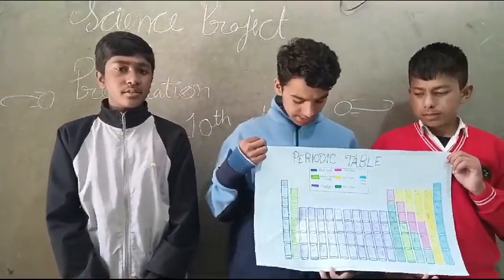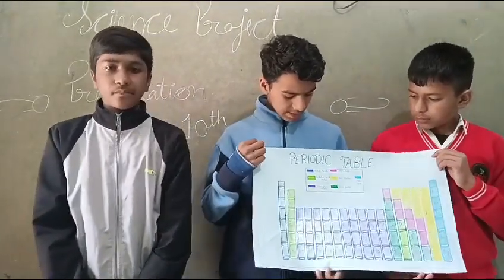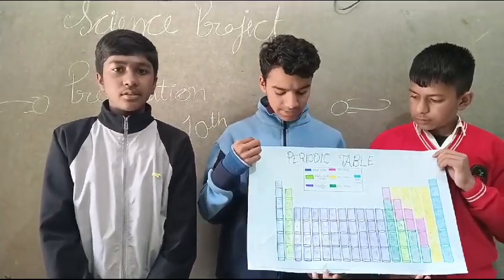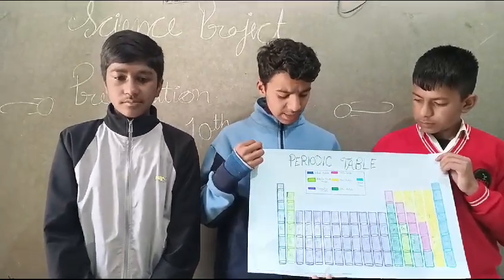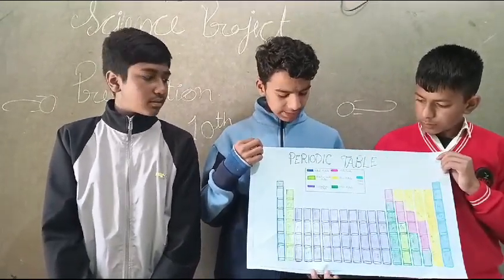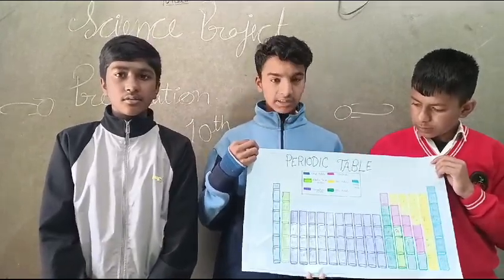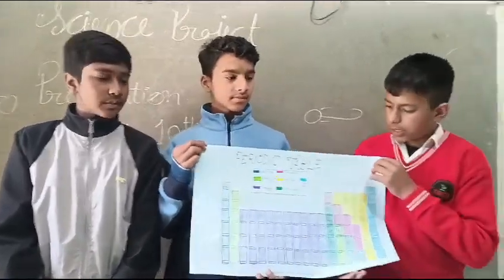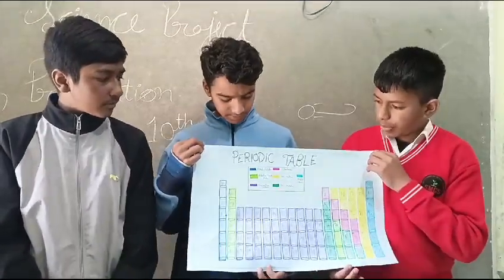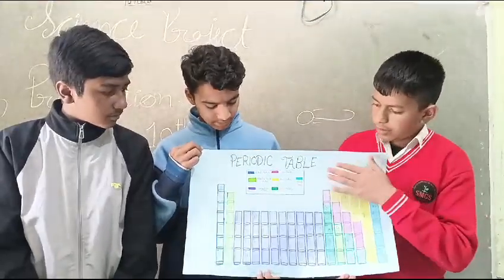Dear friends, which elements are in blue color? They are alkali metals. And which elements are in light green color? They are alkaline earth metals.